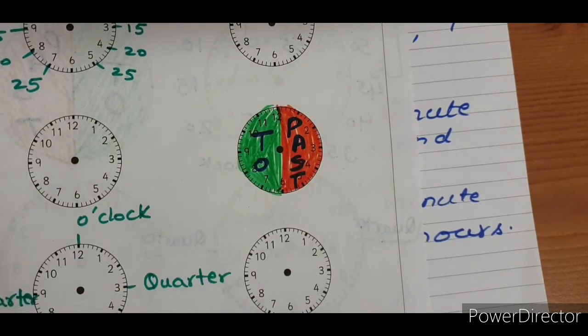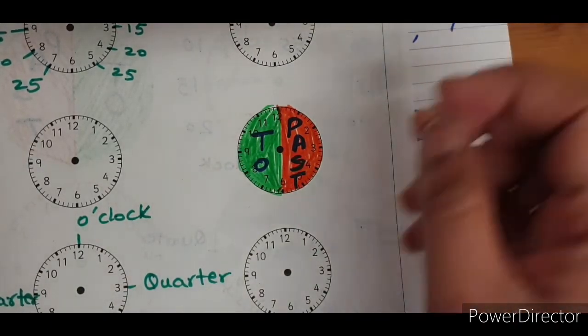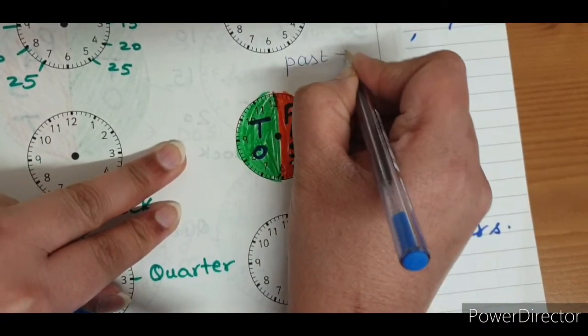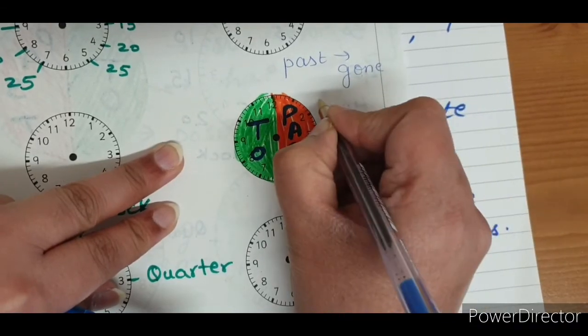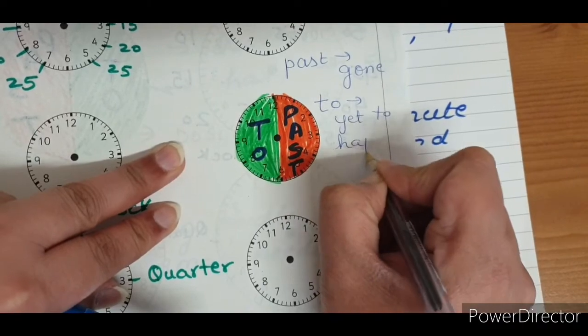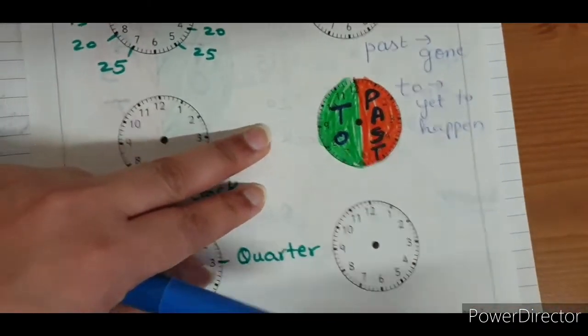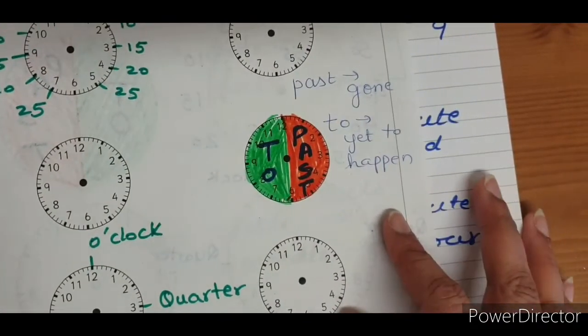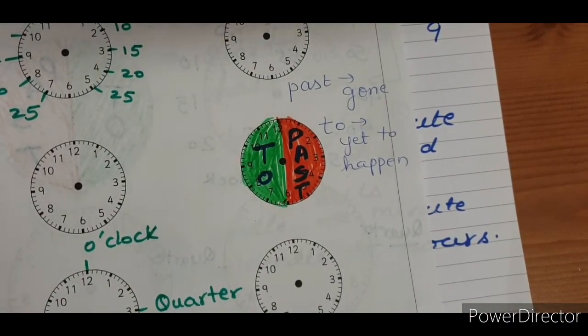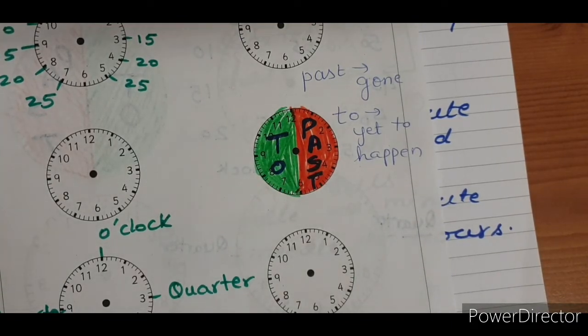Past means gone, which will not come again. You have already crossed it. So, past means gone. It is an English word. To means yet to happen. So, to is the time we use for the time which has not yet happened and will happen in future. Past we use for the time that has already been happened. It's past now. It's gone now.